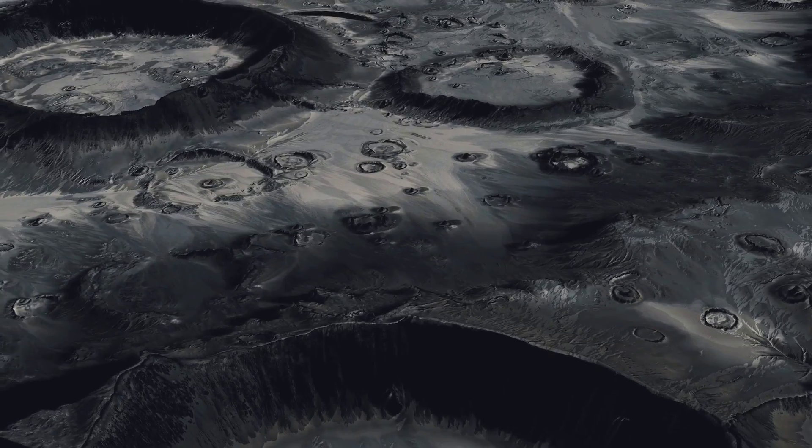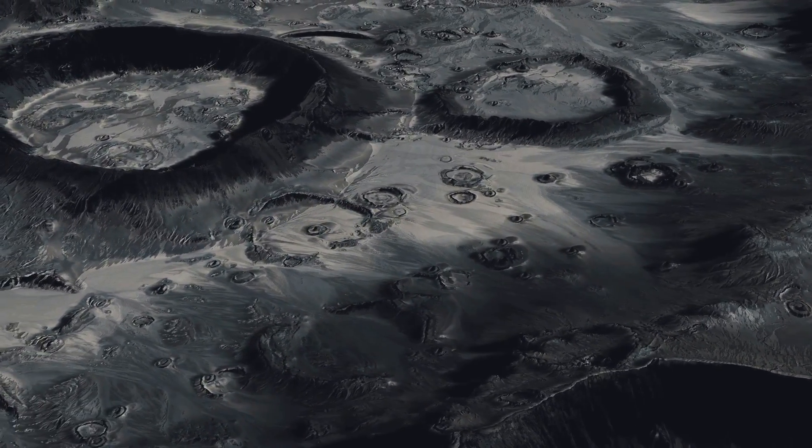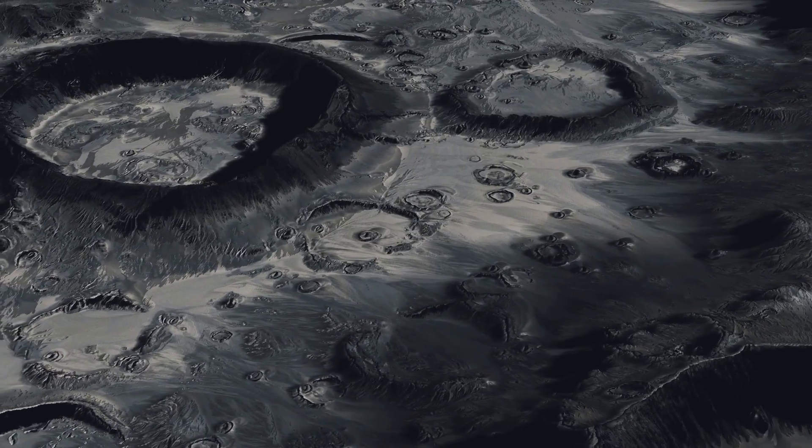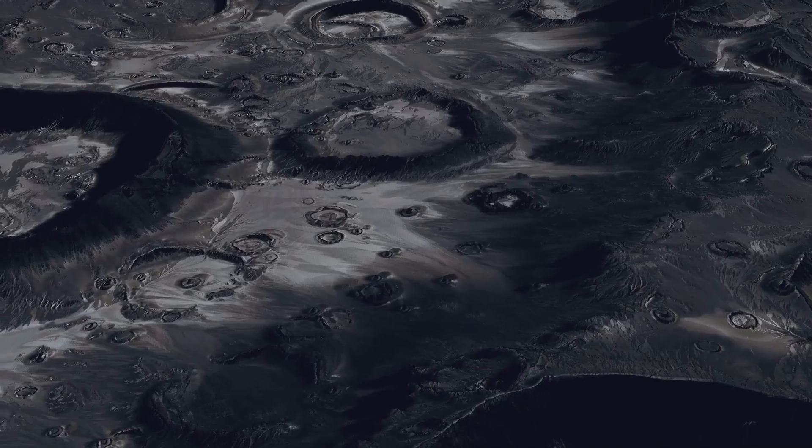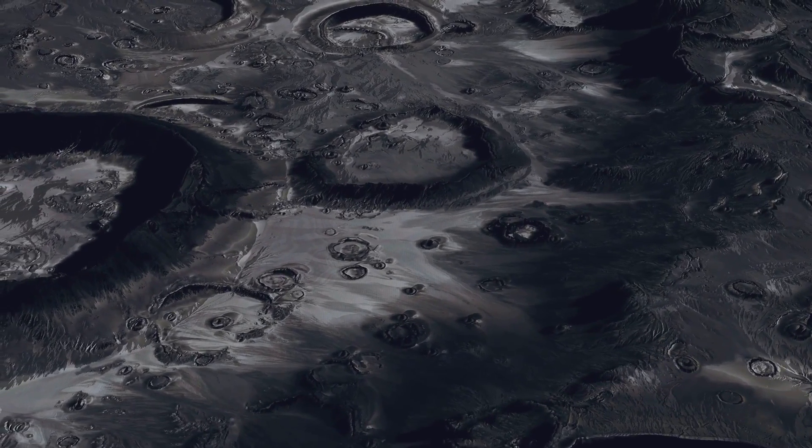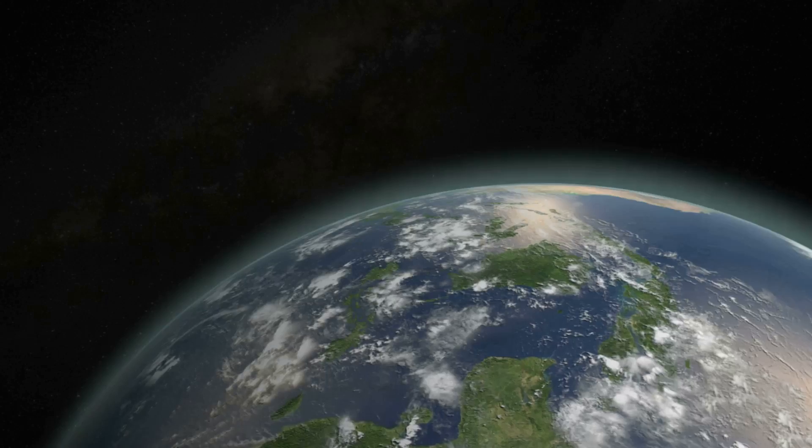Mercury, the smallest and innermost planet in our solar system, is a world of extremes. And when it comes to craters, it certainly doesn't disappoint. Mercury's surface is a veritable sea of craters, more so than any other planet in our solar system. This is largely due to its lack of atmosphere.